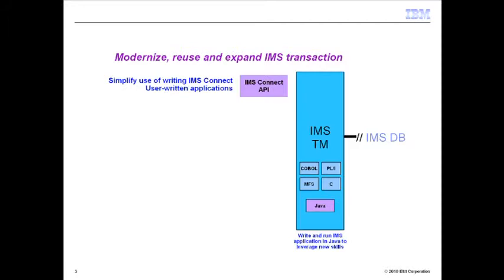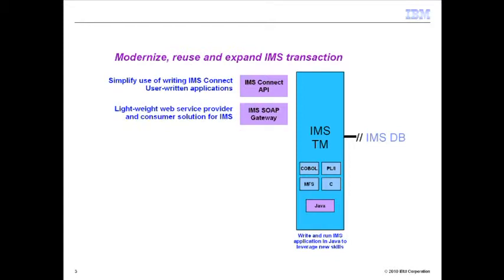Some of the solutions we provide — for example, the IMS Connect API — is an API that allows customers to write Java or C applications to access existing IMS transactions. We also provide the IMS SOAP Gateway, which allows customers interested in web services or SOA environments to have web service clients talk SOAP over HTTP to access an IMS transaction without any change.